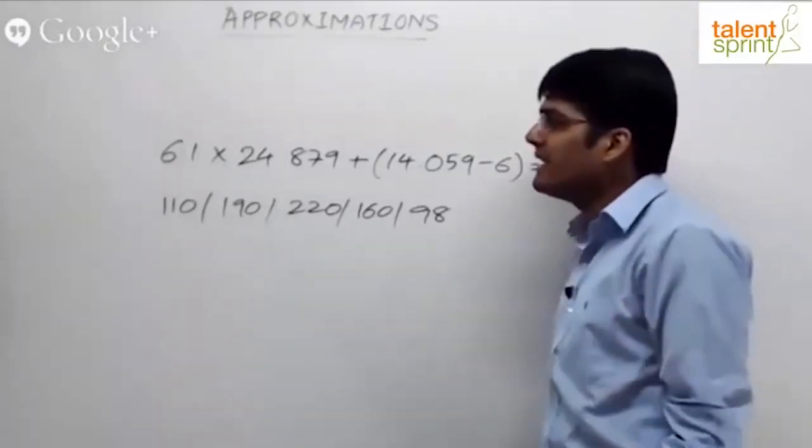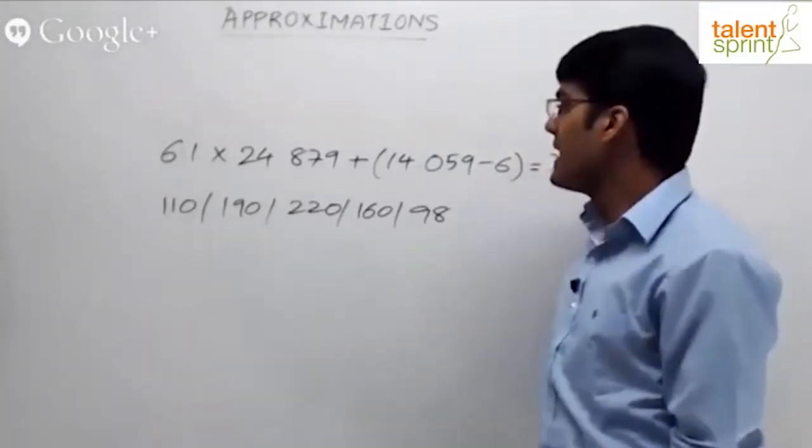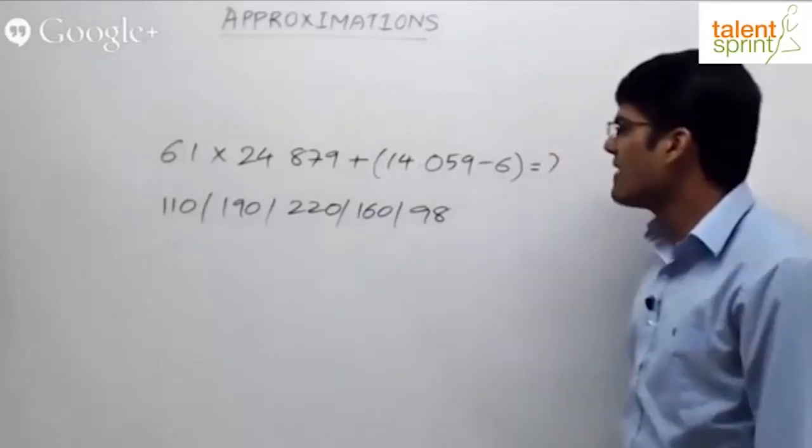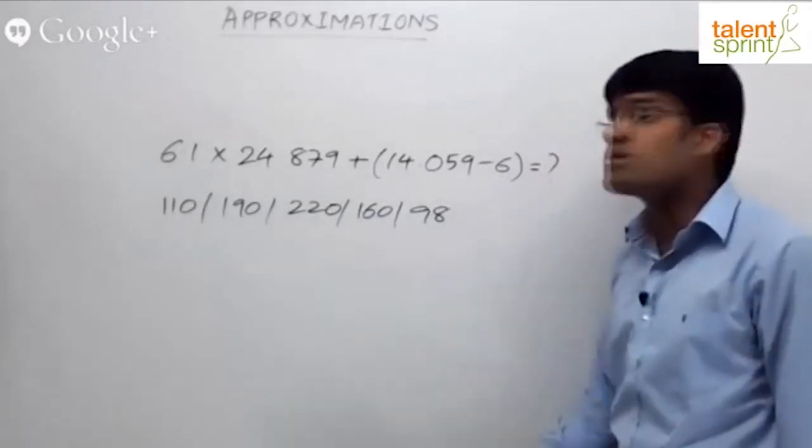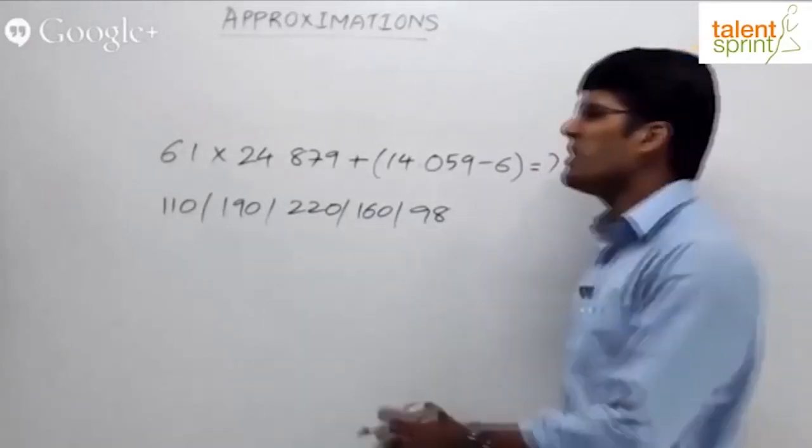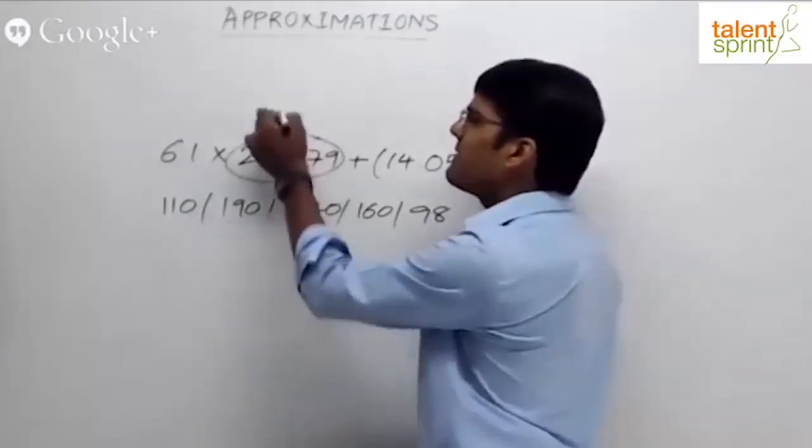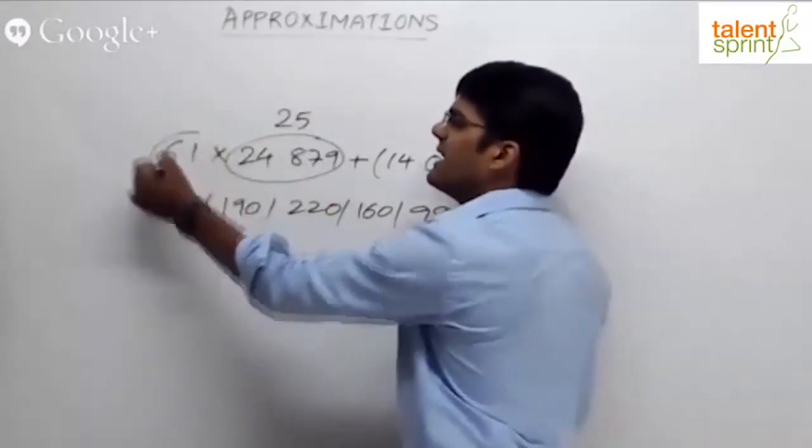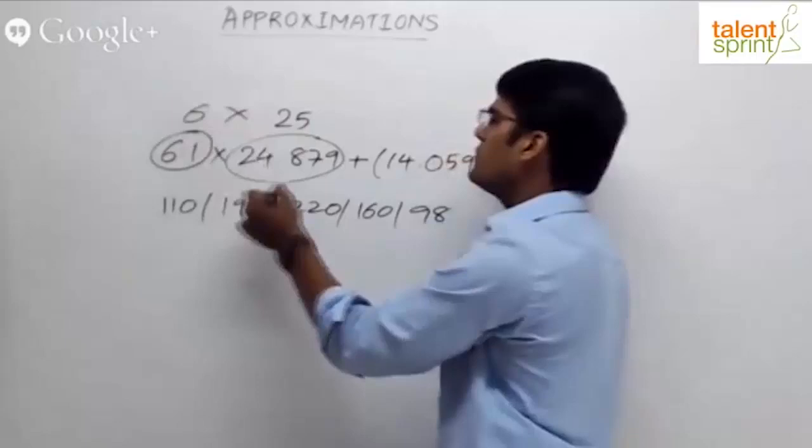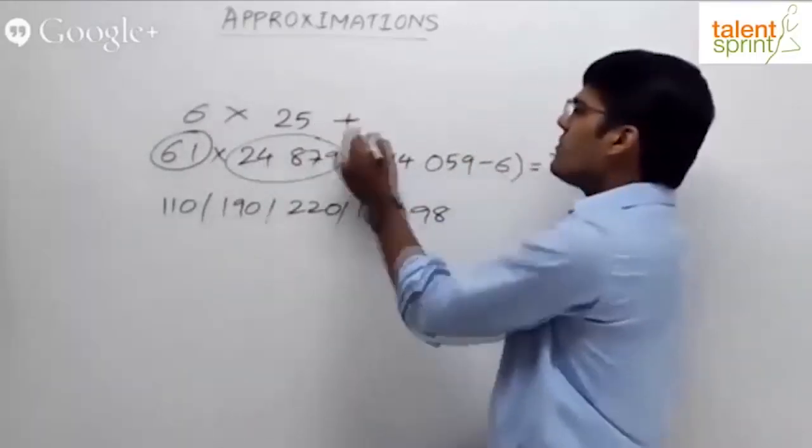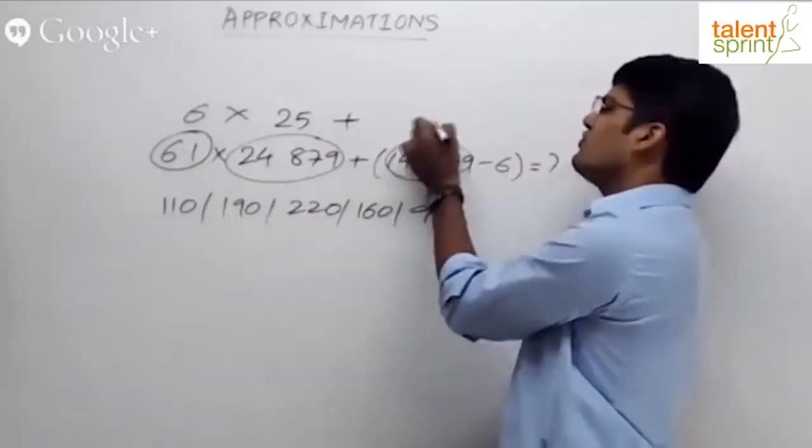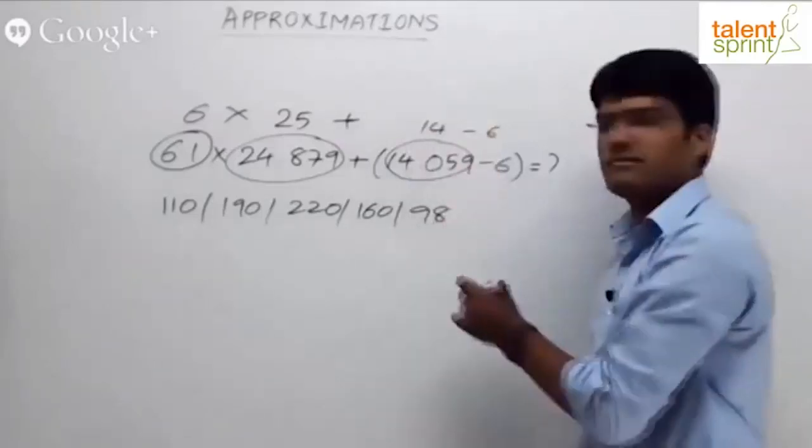6.1 into 24.879 plus 14.059 minus 6 equals to what? What do you do? 24.879, shall we take it as 25 approximately? Yes. Can I take this as 6? Yes. So 6 into 25 plus 14.059 is very close to 14, minus 6.